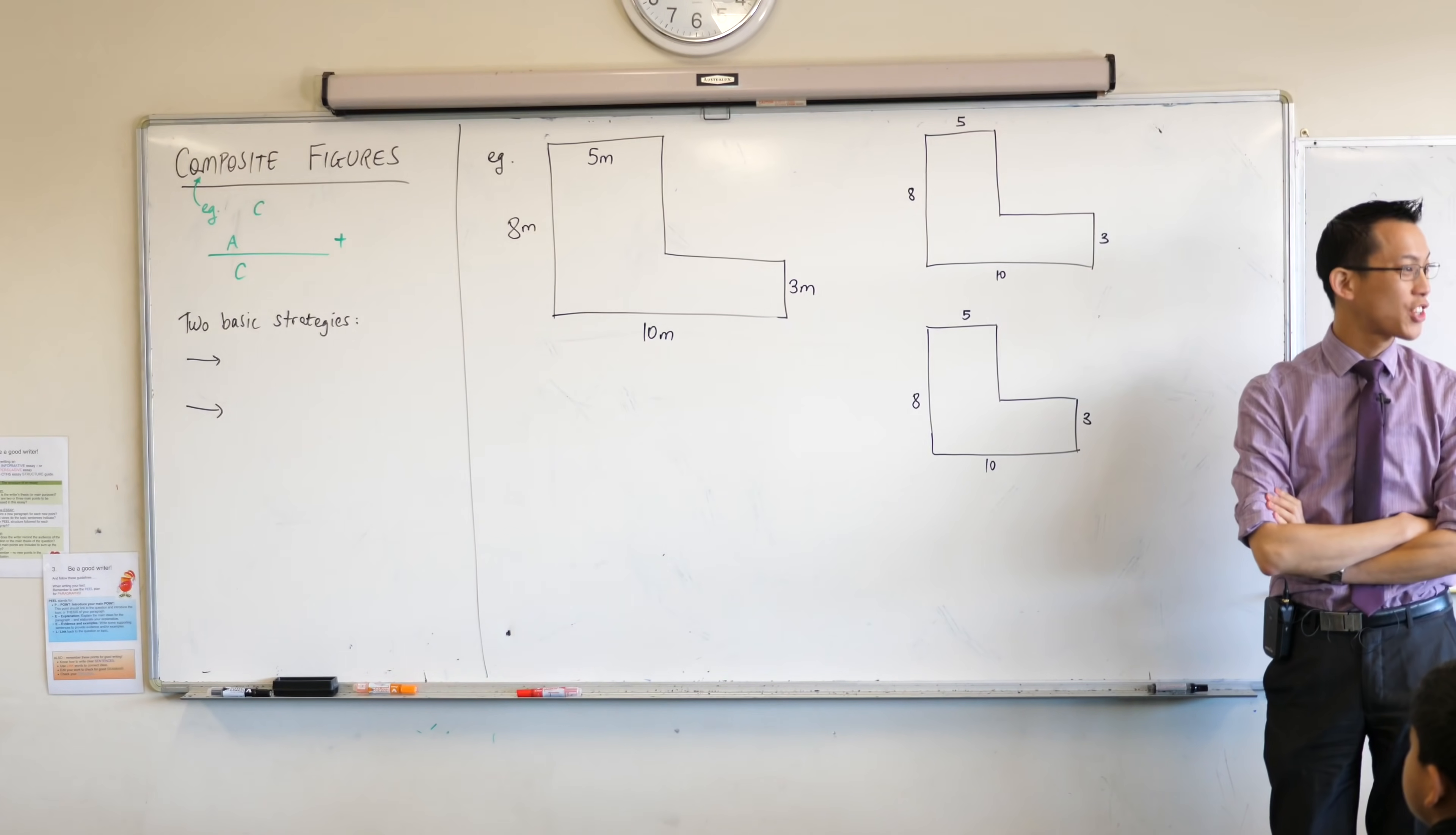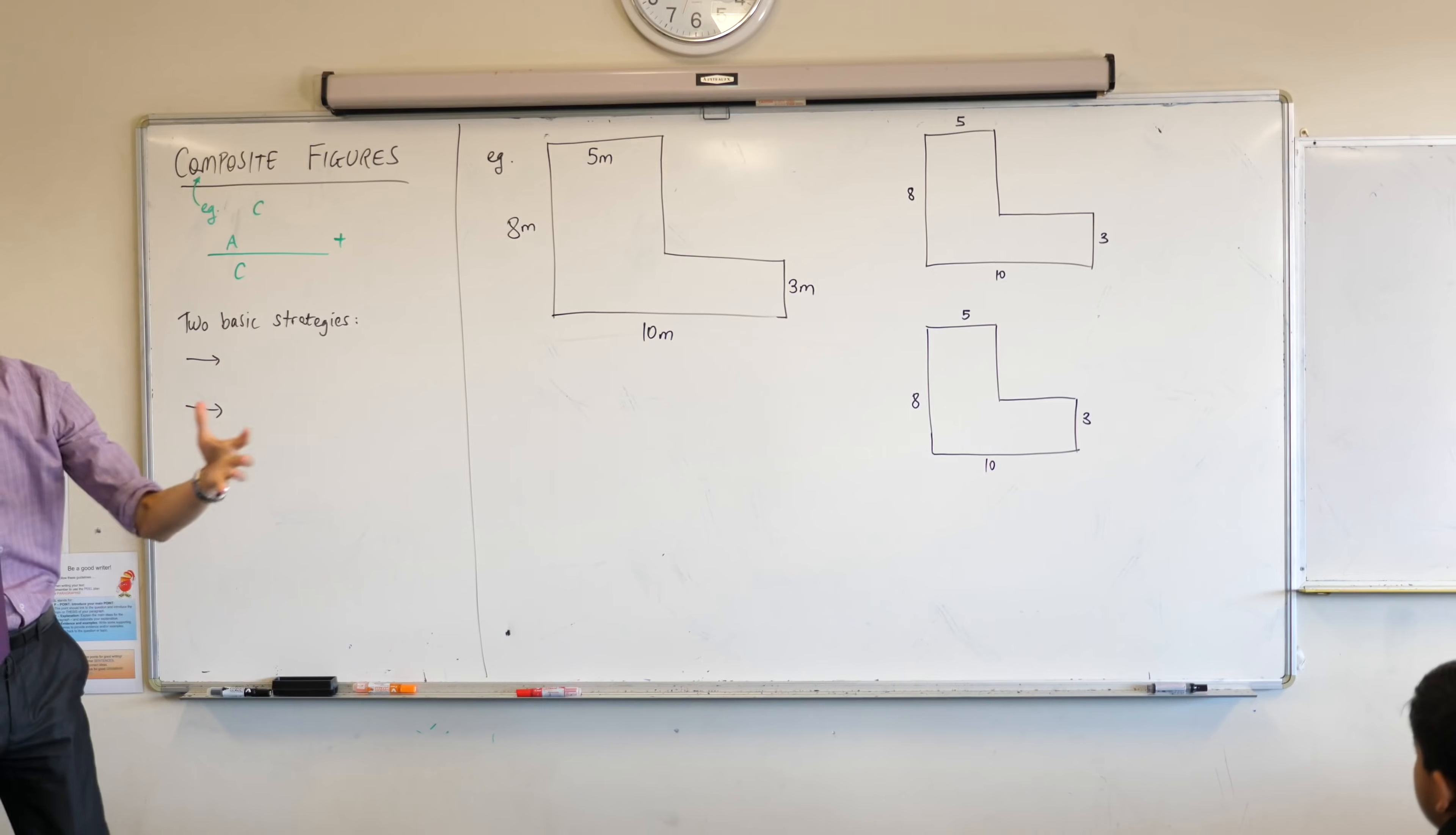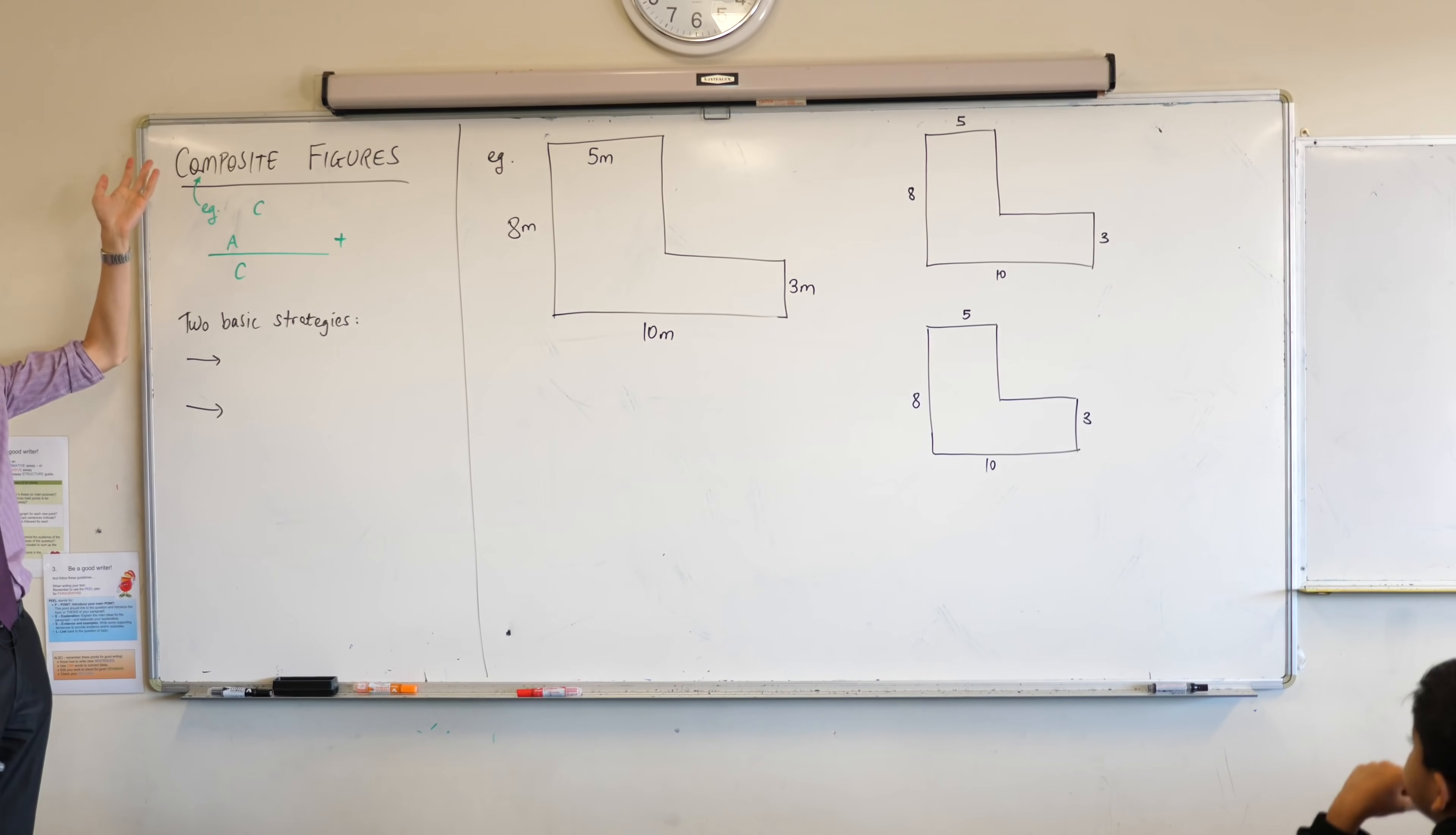We're looking today at composite figures. Now I just want you to remember, I'm so much about words and where they come from and what they mean. Composite just means anything that is made up of, comprised of more than one thing. If you put some things together, you've got more than one thing, you put them together, you call that a composite.